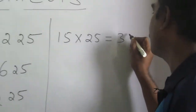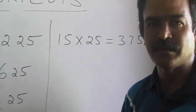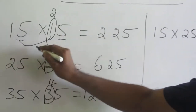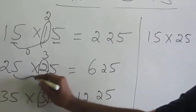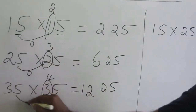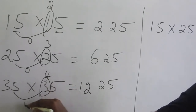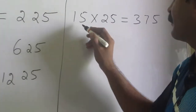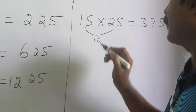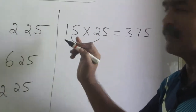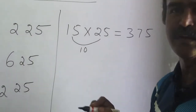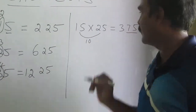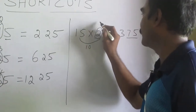Do you know why? We have to observe this. In the last cases, 15 minus 15 is 0, 25 minus 25 is 0, 35 minus 35 is 0. But in this case, 25 minus 15 is 10. Whenever there is a gap of 10 between numbers ending with 5, the last two digits will always be 75. You guessed the first digit correct — the first digit is 3.